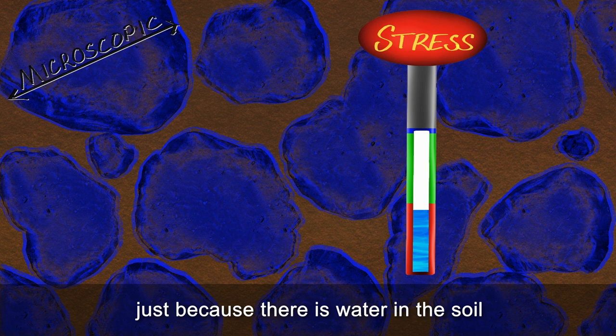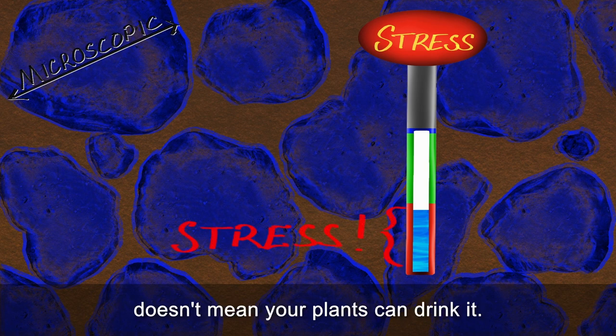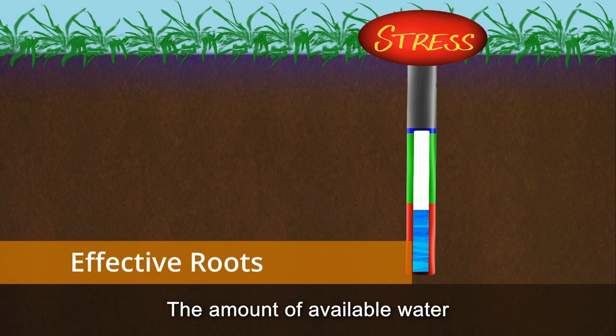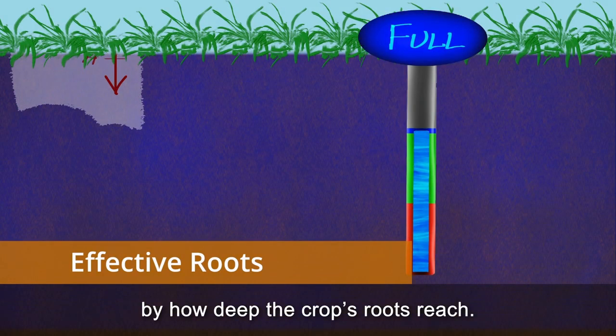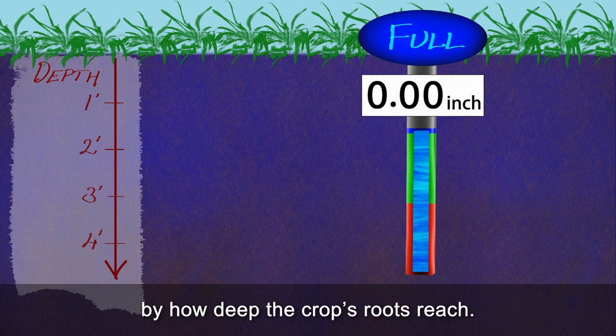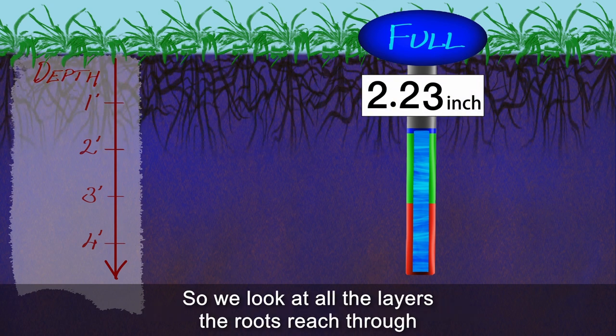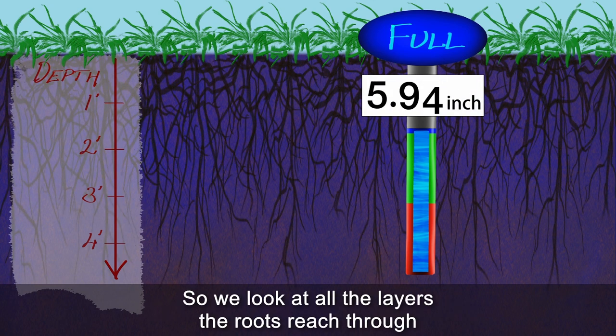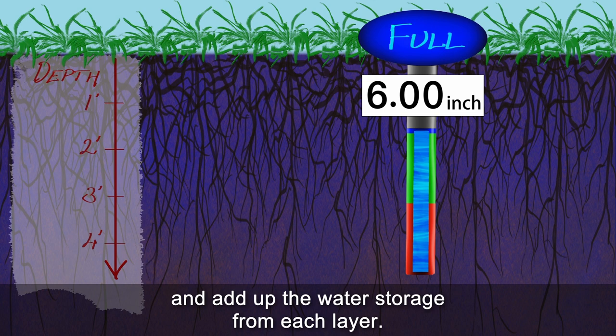Just because there is water in the soil doesn't mean your plants can drink it. The amount of available water is also limited by how deep the crop's roots reach. So we look at all the layers the roots reach through, and add up the water storage from each layer.